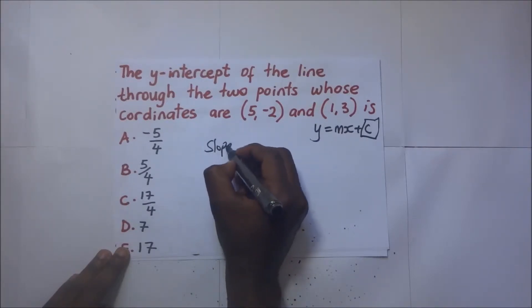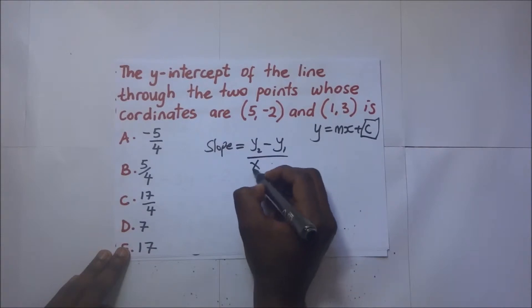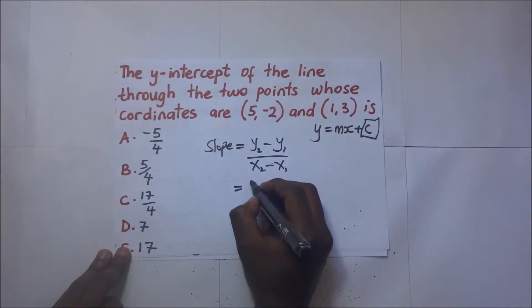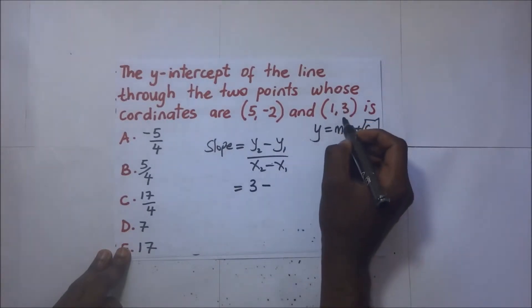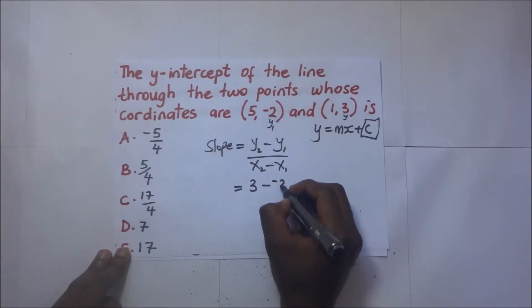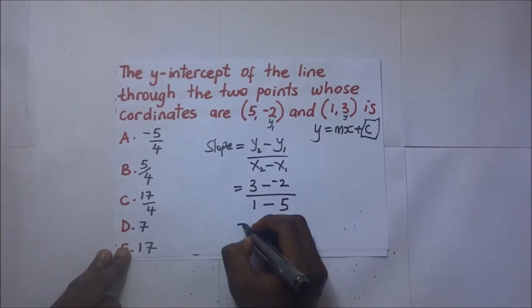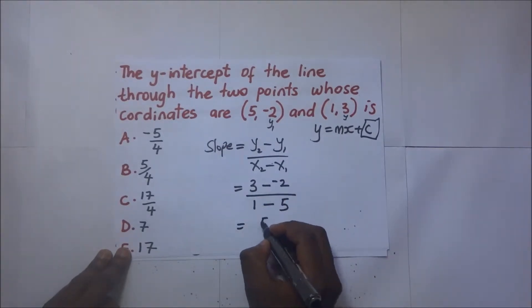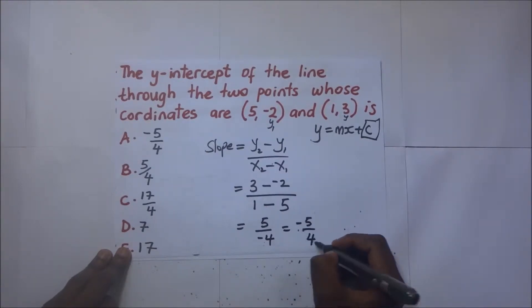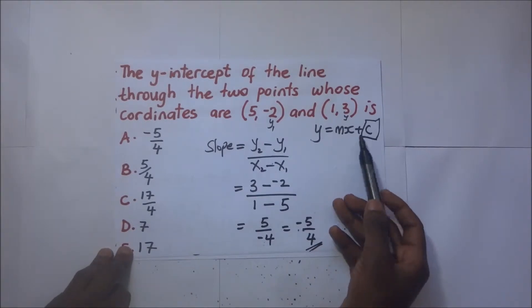The gradient equals y2 minus y1 over x2 minus x1. That gives us y2 = 3, minus y1 = -2, divided by x1 = 1, minus x2 = 5. That's 3 plus 2 which is 5, divided by negative 4, giving a gradient of negative 5 over 4.